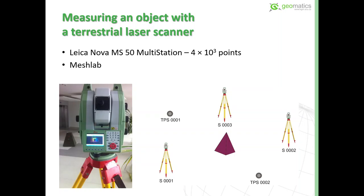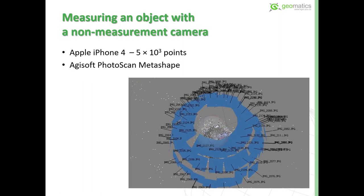TPS1 and TPS2 are two reflecting prisms that were used for stitching the partial laser scans obtained from scan stations S1, S2, and S3. MeshLab software was used for processing the point cloud and creating the 3D model, which contained about 4,000 points.